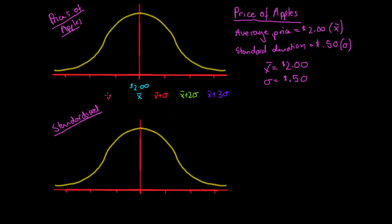The markings to the left will all be negative. The first marking represents x-bar minus one standard deviation, the second represents x-bar minus two standard deviations, and the last marking is x-bar minus three standard deviations. They're the same distance apart, just with opposite signs. So the prices to the left are less than those to the right, and at these points the difference in price will be equal and opposite.